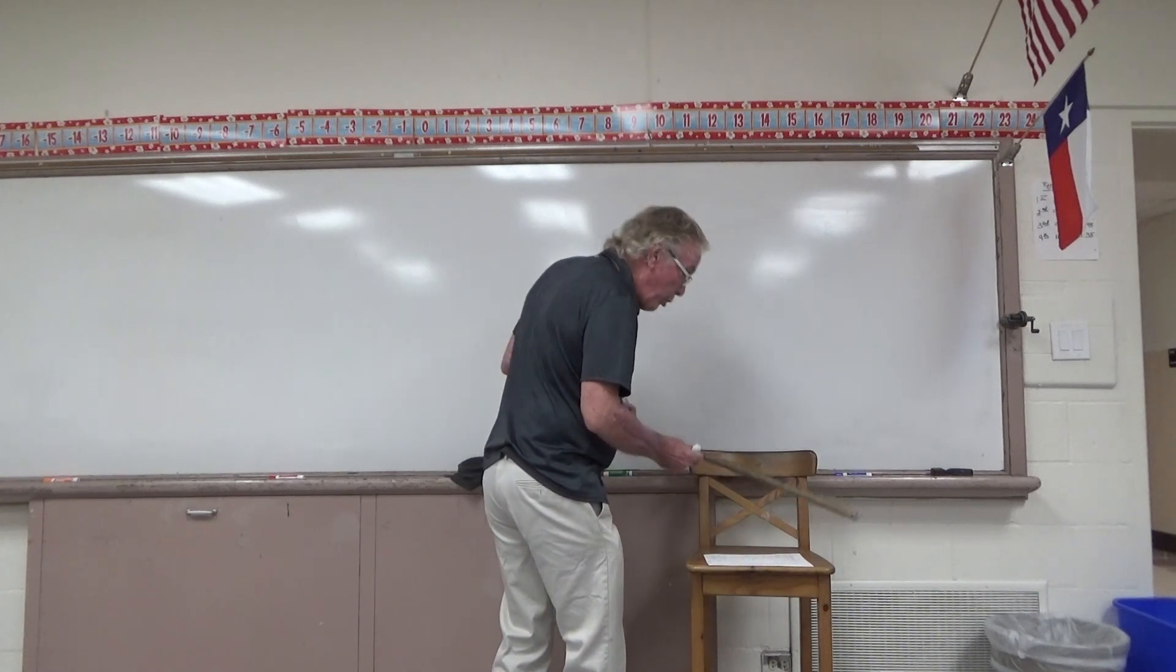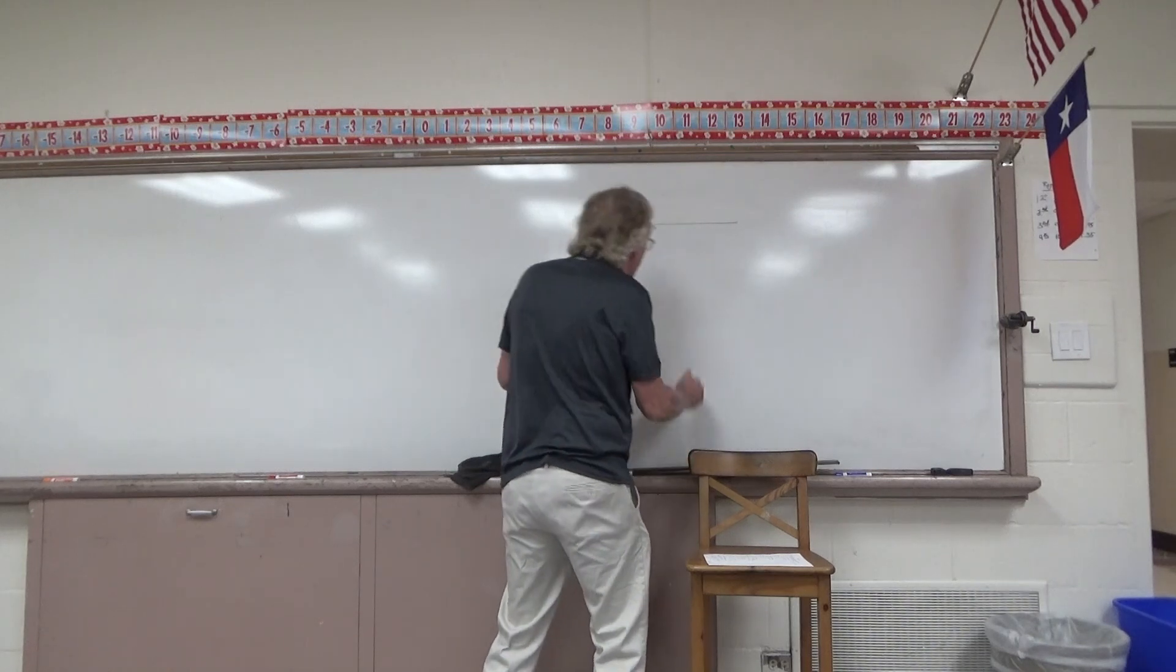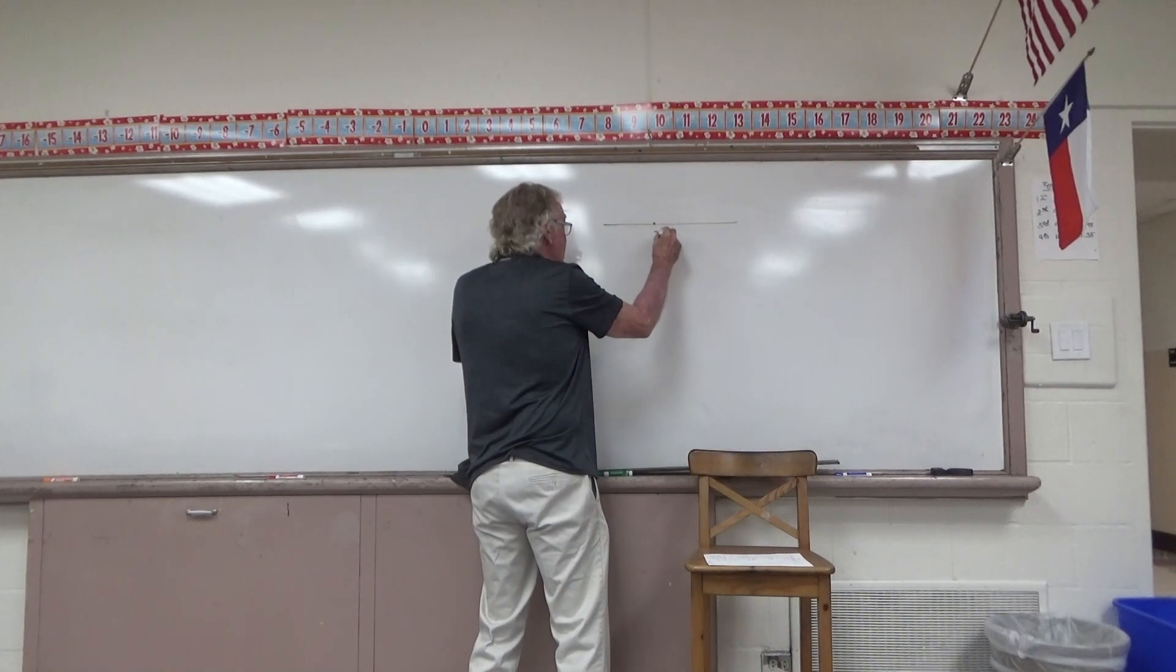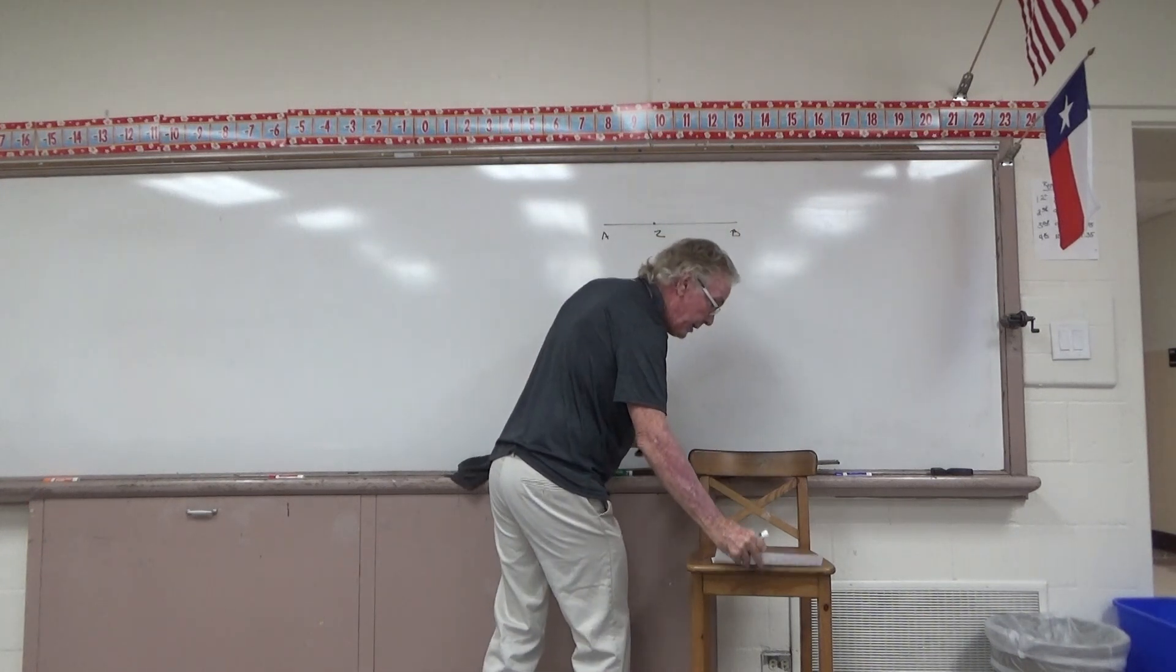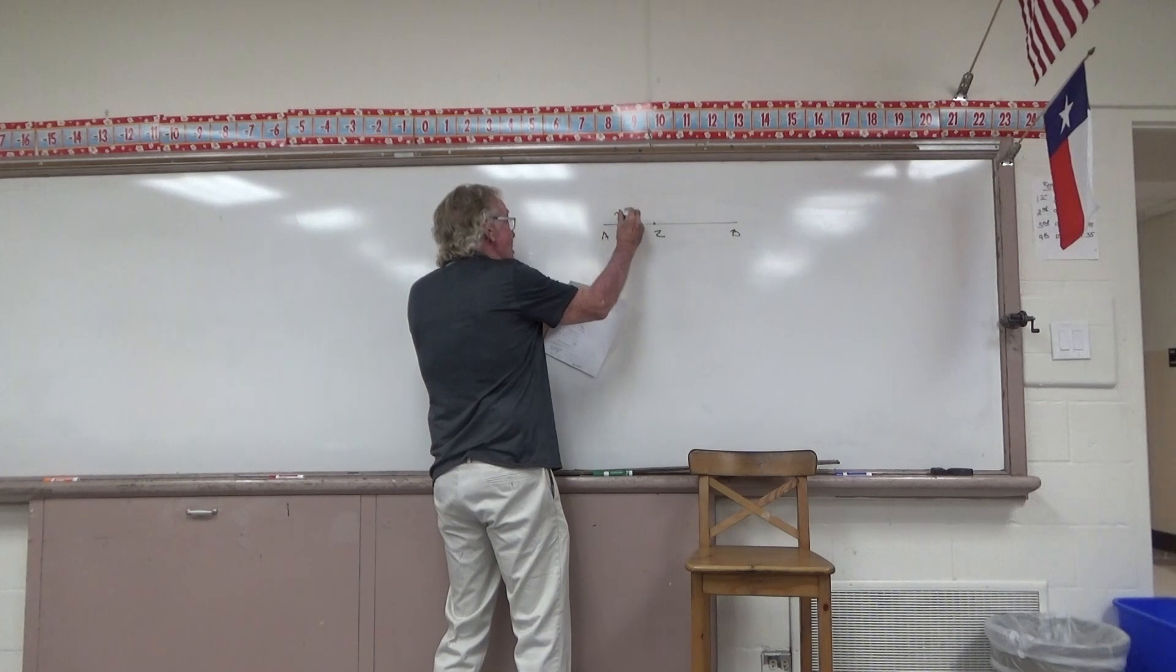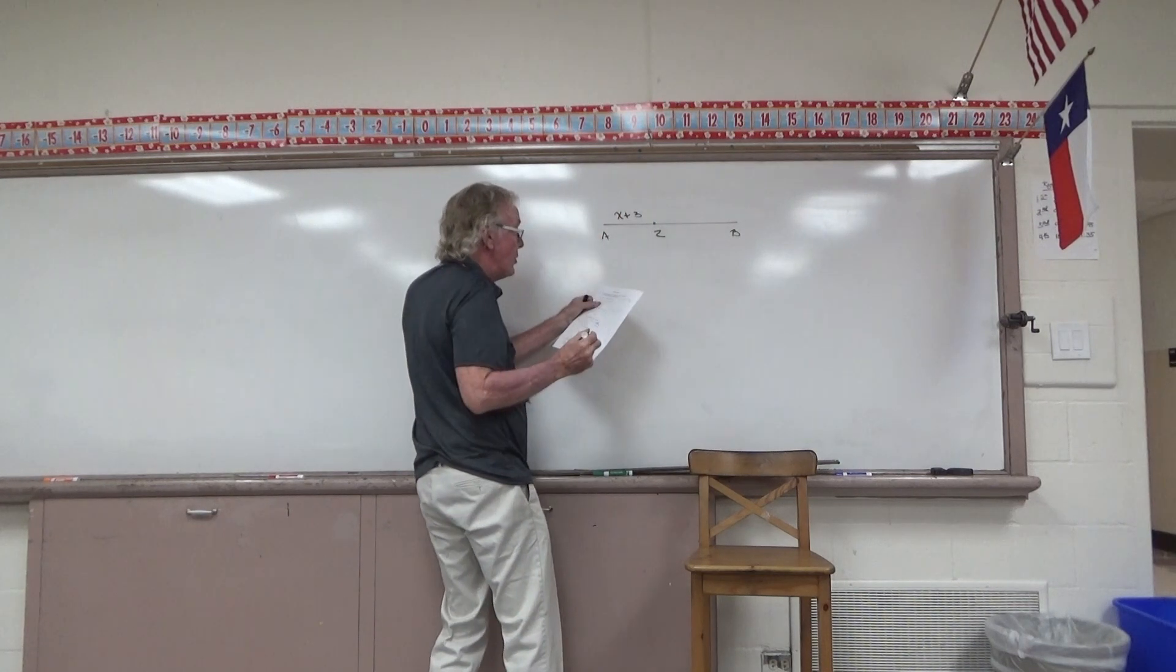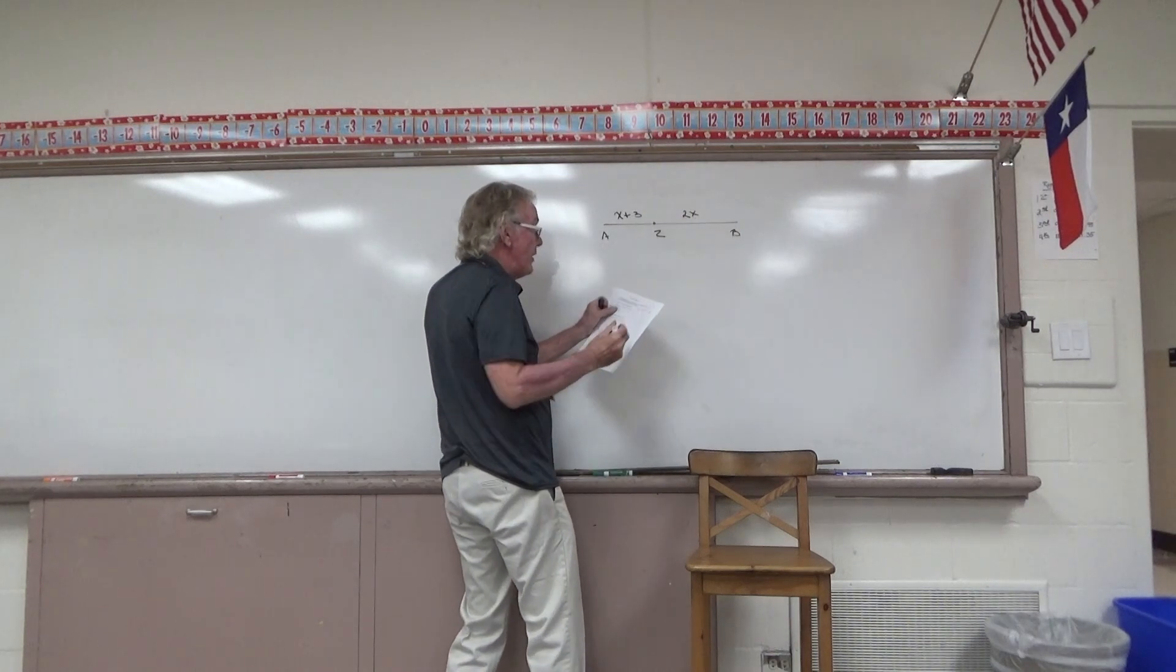It tells me that point Z is somewhere between A and B. I'll make that sketch, showing a point Z somewhere between A and B. It also tells me that AZ is X plus 3. Further, that ZB is 2X. And the full length AB is 30.